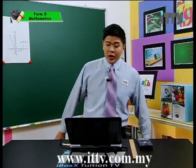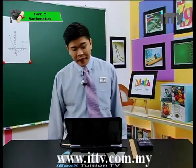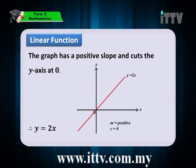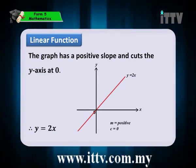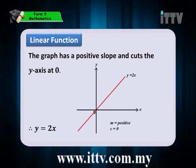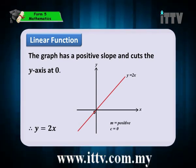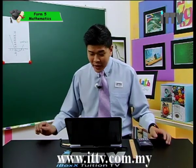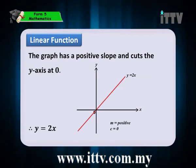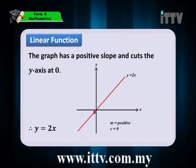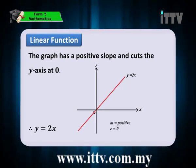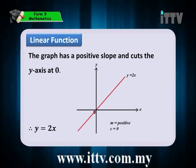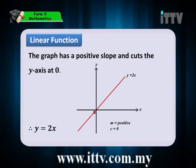This graph has a positive slope and cuts the y-axis at 0, which means the straight line goes up from left to right. The equation of this graph is y equals 2x. Since the y-intercept is 0, we write the equation as y equals 2x, where the gradient is 2.